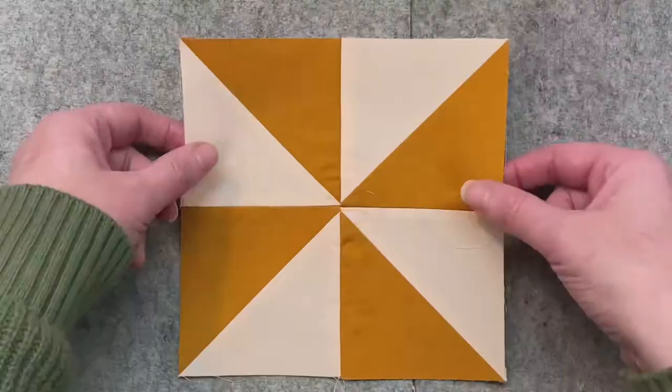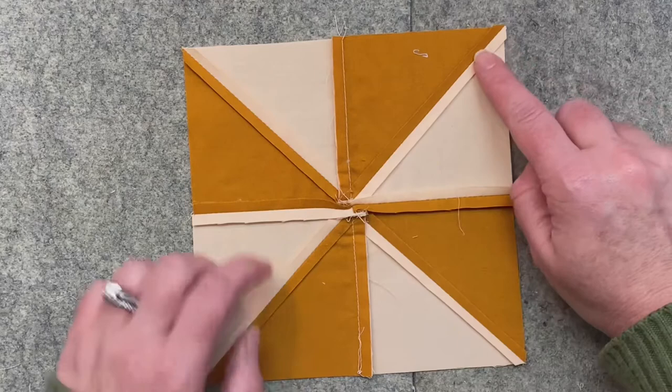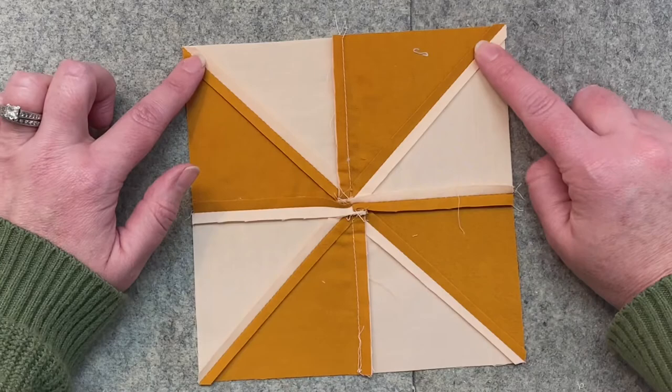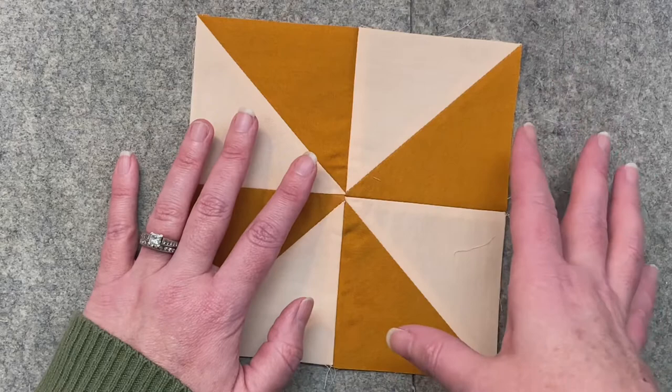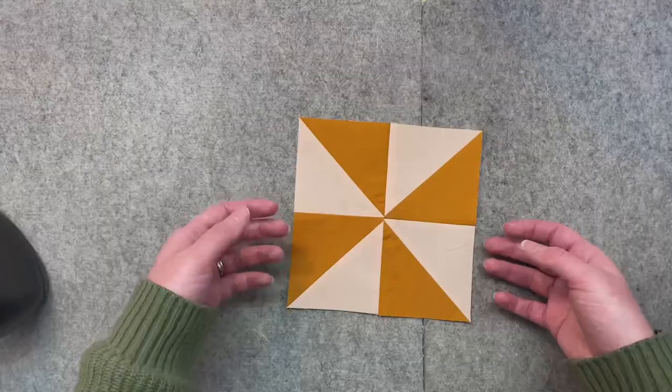One last thing I want to include before I say goodbye: when we made our half square triangles, before I trimmed them down, I used a scant quarter inch when I sewed them. But when I sewed all these pieces together, when I sewed my rows together and when I sewed these two rows together, I didn't use a scant quarter inch. I used an almost complete quarter inch seam.